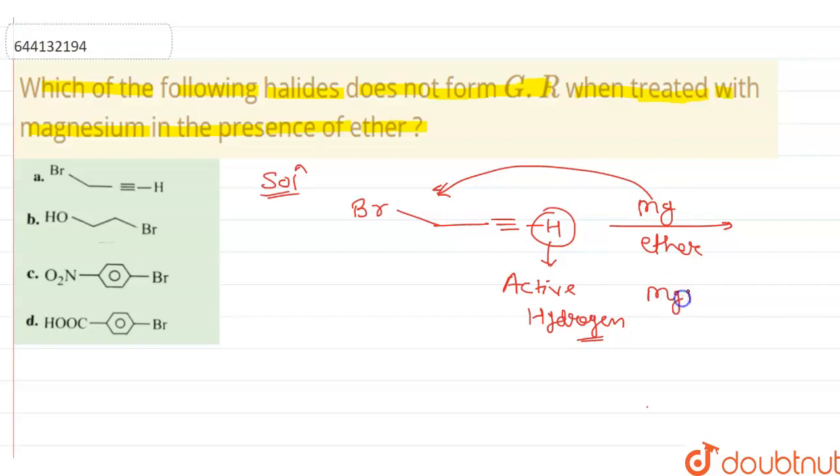Okay, but this active hydrogen will react with MgBr and does not form Grignard reagent. So due to presence of active hydrogen in this compound, finally we will not get Grignard reagent of this compound.